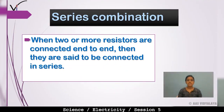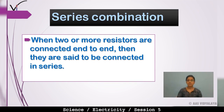So what is series combination? When two or more resistors are connected end-to-end, they are said to be connected in series. Simply, in a series combination, resistors are connected end-to-end.